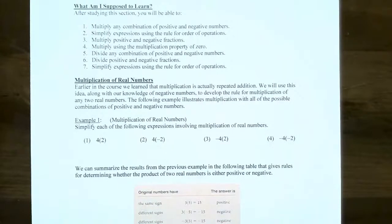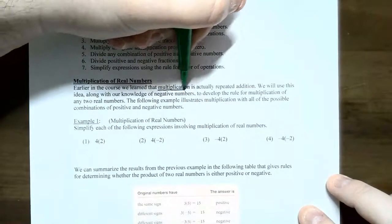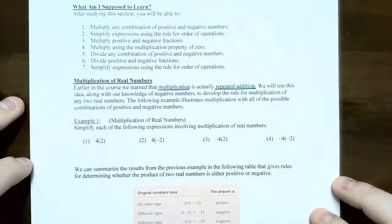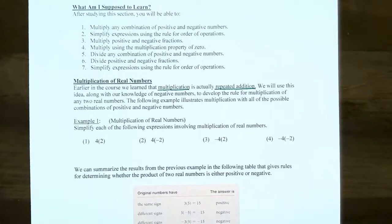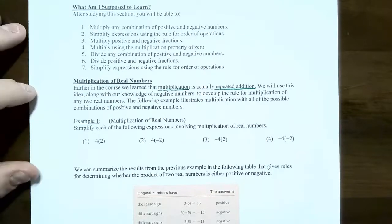Multiplication is really just repeated addition. So if you have 4 times 2, it's really adding 2 four times. We're going to use this knowledge along with our knowledge from the last couple of videos on adding and subtracting real numbers to find out whether the answer will be positive or negative based on how many negatives are in the problem when we are multiplying.